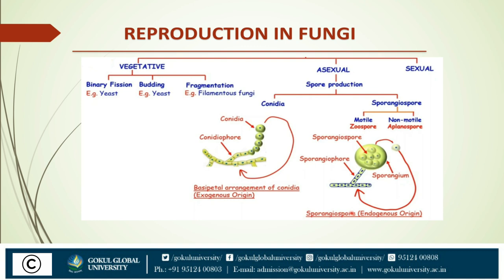The conidia are exogenous in origin, meaning they form outside the body. Each individual conidium can make a new mycelium. In sporangiospore formation, the tip of hyphae swells into a large cell-type structure called the sporangium. Many nuclei form in the sporangium and cytoplasm division occurs. Many sporangiospores are found under the sporangium, each capable of forming new mycelium. The spore comes out from the sporangium and starts forming new mycelium — so it is of endogenous origin. Sporangiospores are of two types: motile, known as zoospore, and non-motile, known as aplanospore.